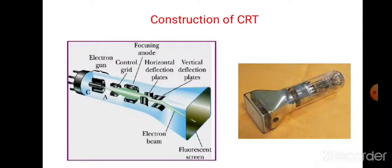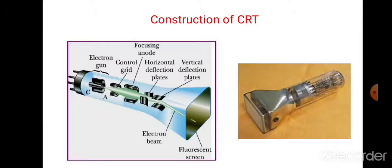The next component is the focusing system. The focusing system is used to force the electron beam to converge to a small spot on the screen. When the filament starts heating, the accelerated electrons are forced to converge to a small spot on the screen. If there is no focusing system, the electrons will be scattered because of their own repulsion, and hence we cannot get a sharp image.